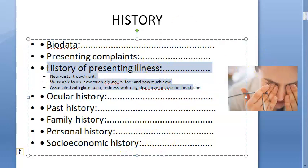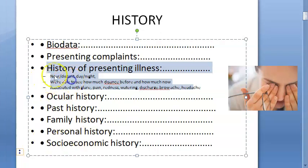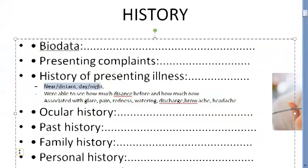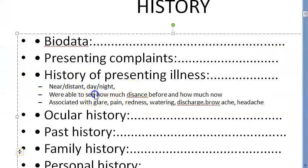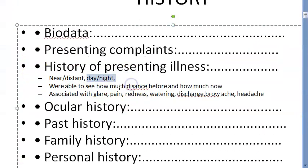In the history of presenting illness, you elaborate further. The patient was apparently normal some months back when they noticed diminution of vision — onset gradual, progressive in nature. Then you will ask about details: is the difficulty with near vision or distant vision, and does it occur during the day or at night?